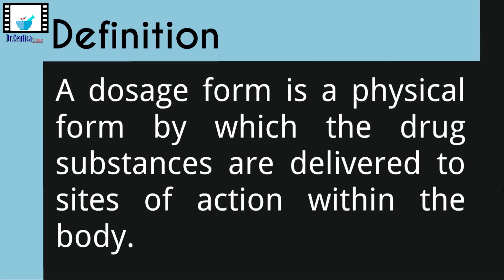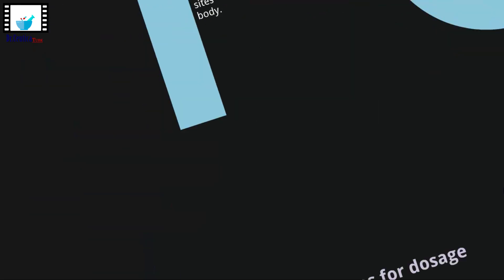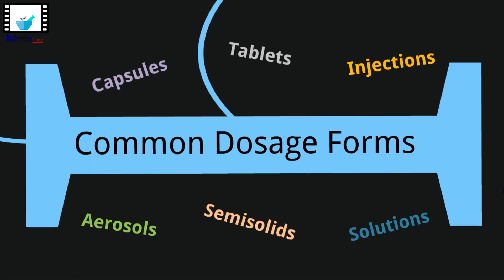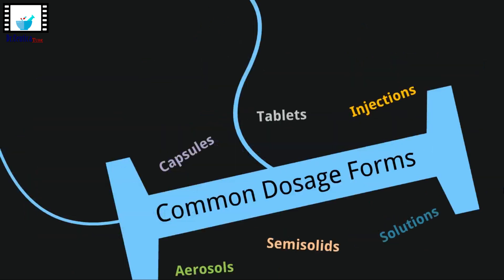A dosage form is a physical form by which the drug substances are delivered to the areas where they have to exert their action, or the sites of action within the body. There are so many dosage forms out there. Some of the common ones are tablets, capsules, solutions, injections, and inhalers, and you might know some others.